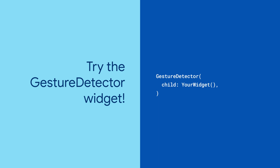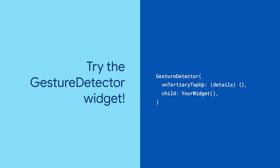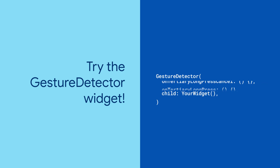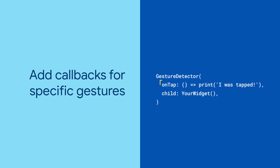To start, wrap a portion of your UI in a Gesture Detector and start thinking about what interactions you expect. Gesture Detector takes an enormous amount of callbacks to cover everything your users might do, but you don't have to define them all or even know them all. To recreate button-like behavior, add a callback for OnTap.